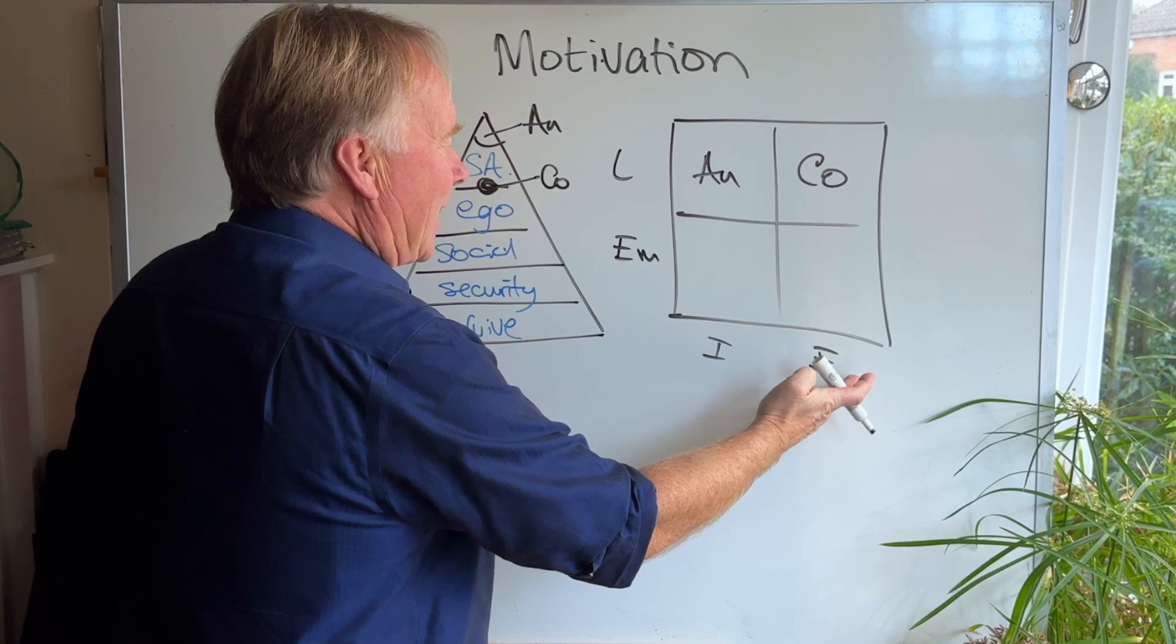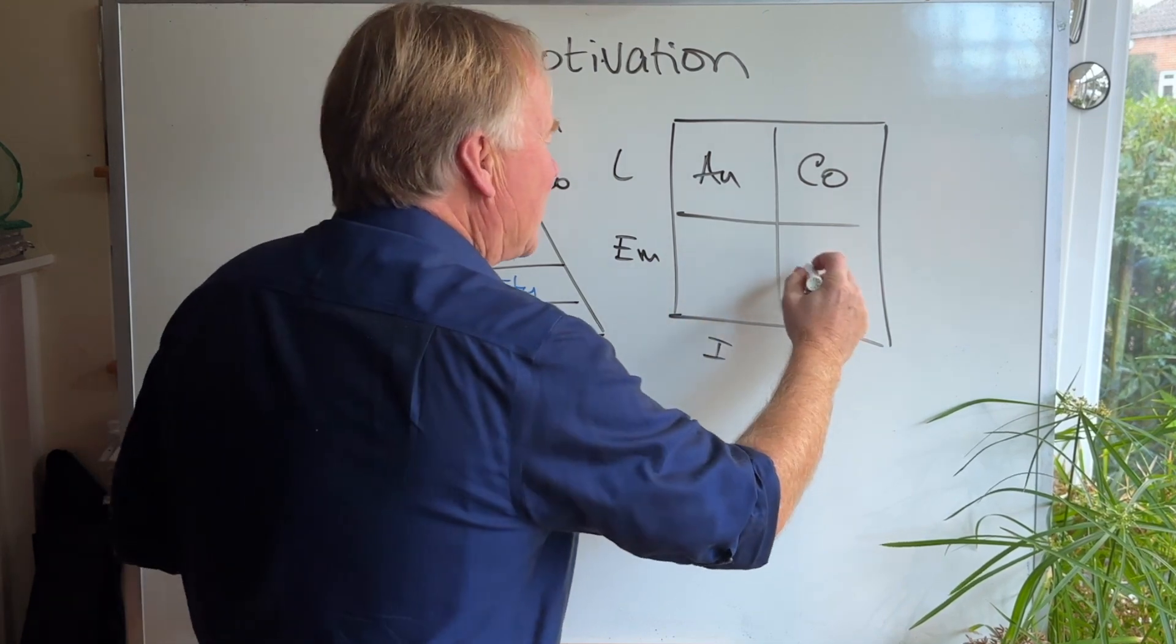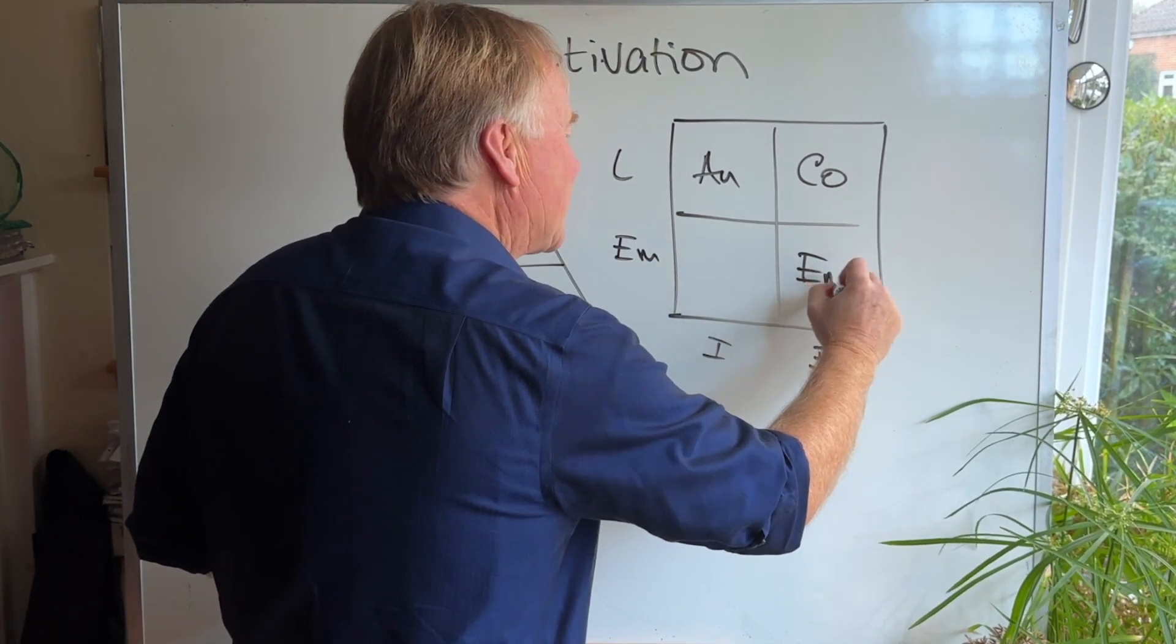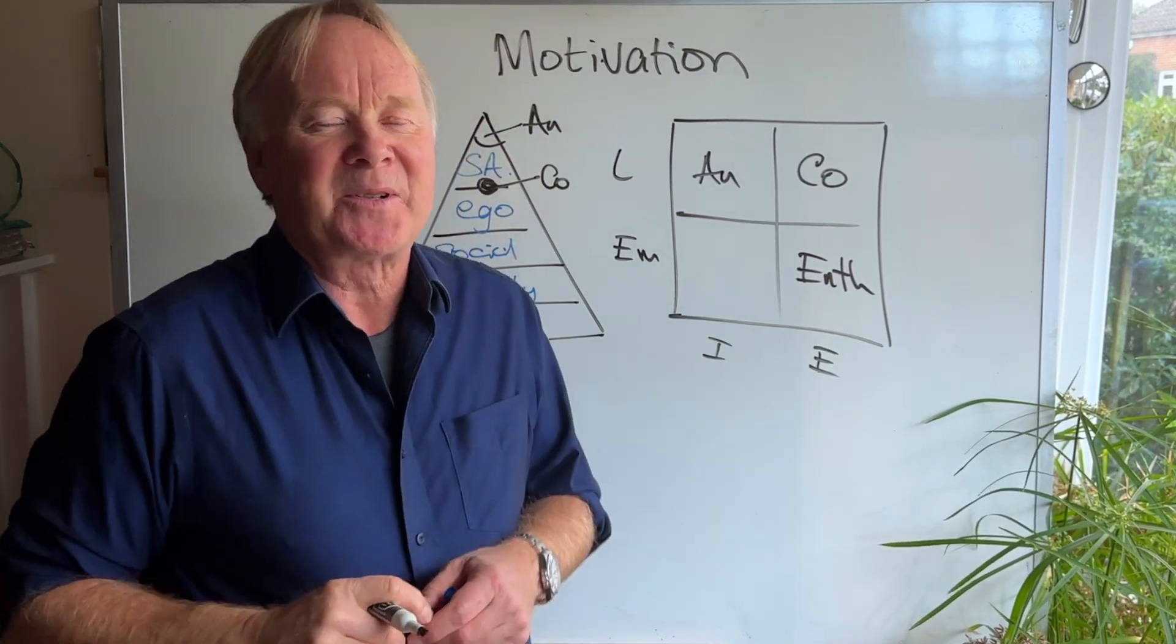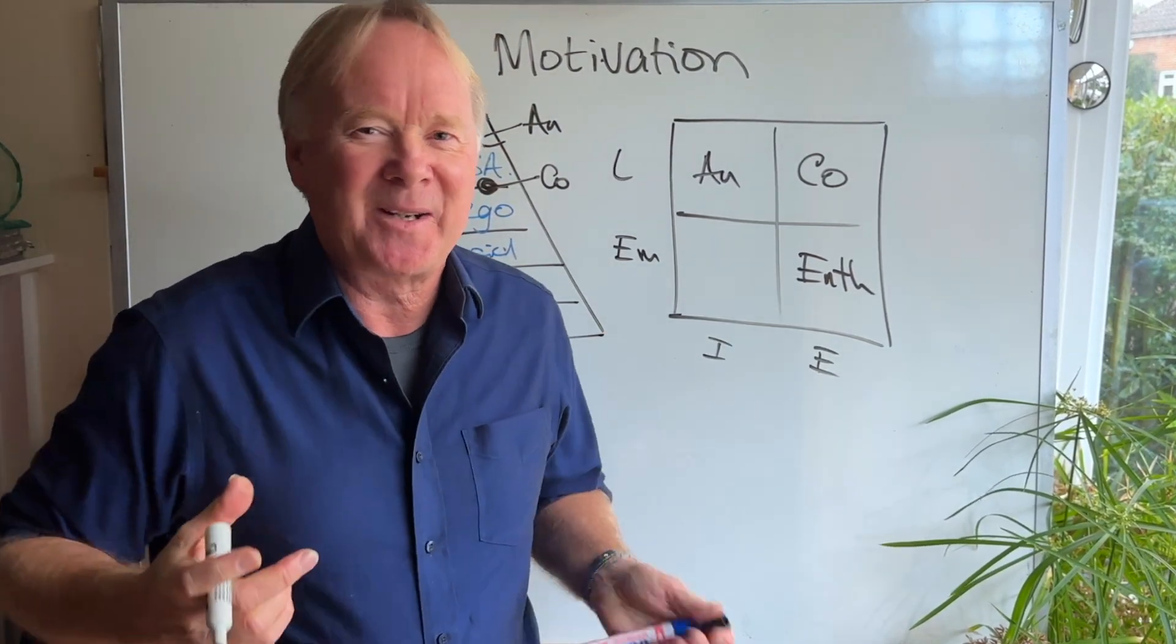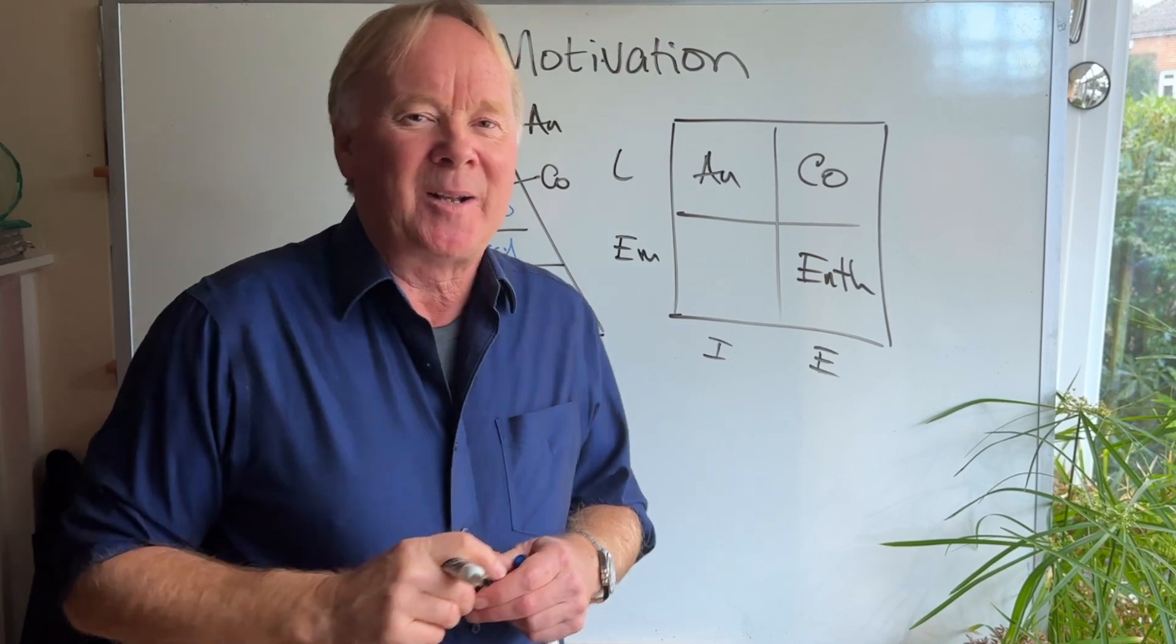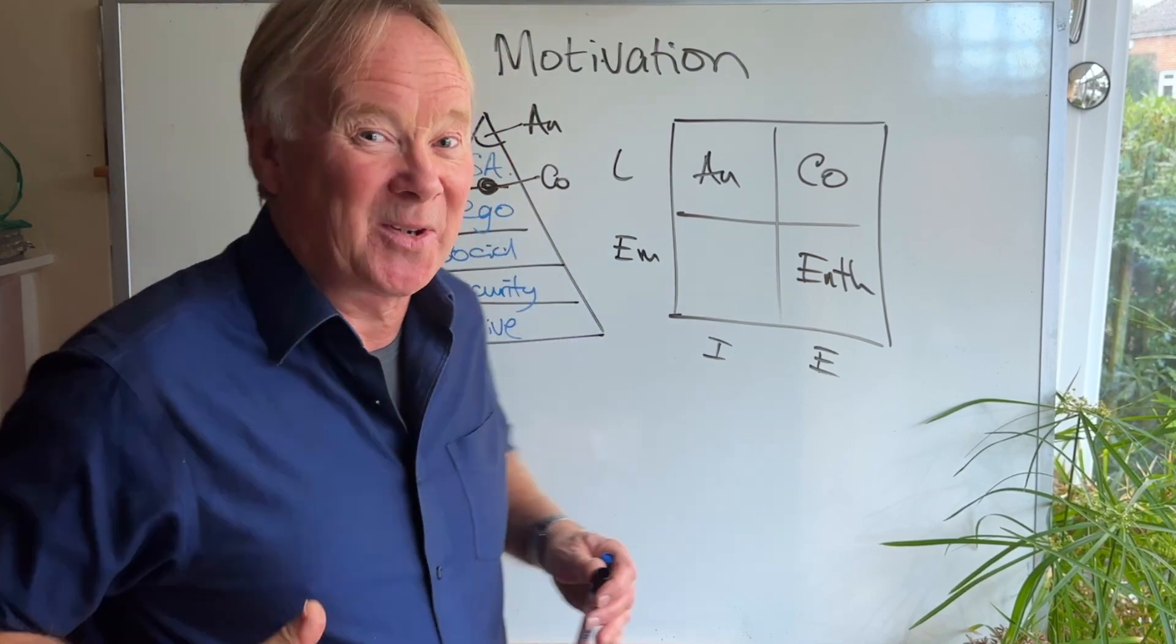The third one, also extrovert but much more emotional, is what some people call the enthusiast. The enthusiast is motivated by fun and excitement and a vision of the future and being part of a group of people who are all doing exciting things.